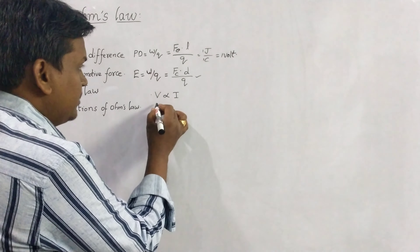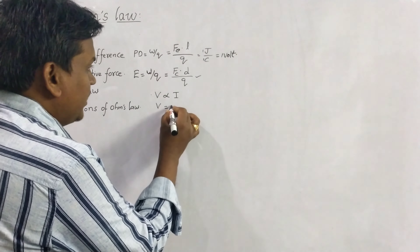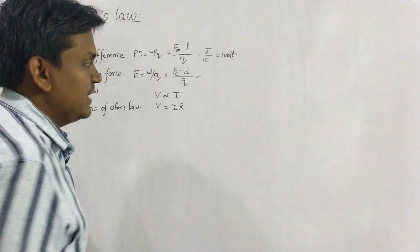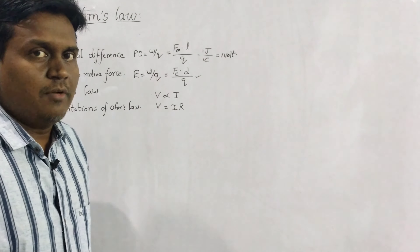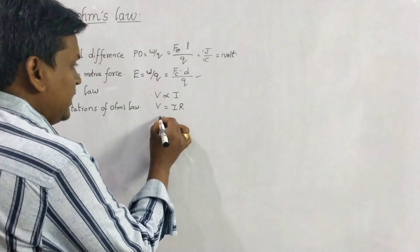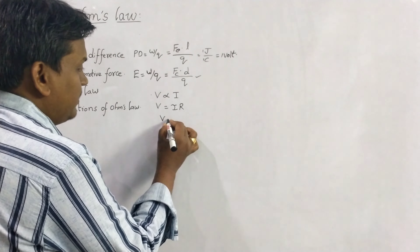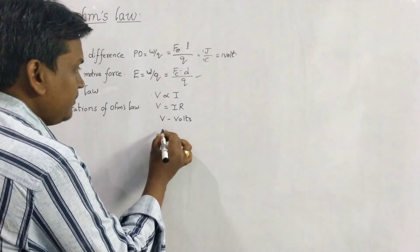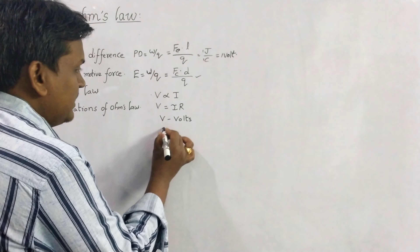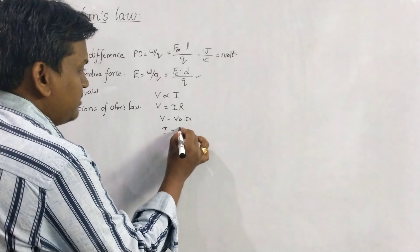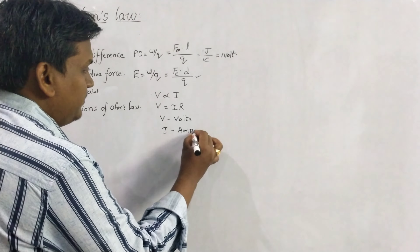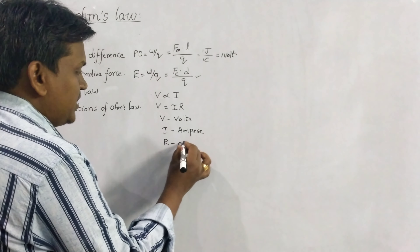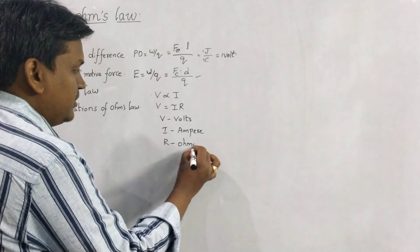Here, work done is the work done by chemical force Fc into distance, where the distance is the distance between the two terminals — positive terminal and negative terminal. So E equals Fc into D upon Q. The unit is the same as potential difference: Joule per Coulomb, or 1 Volt. Now coming to Ohm's law.